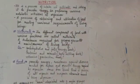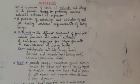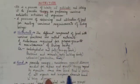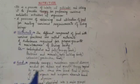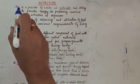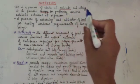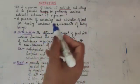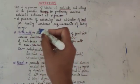Next, we will deal with nutrition — how we obtain food and how the process of intake of nutrients and their utilization works. Energy is needed to maintain a state of order in our body, and that energy we get from the food we eat. Nutrition is defined as a process of intake of nutrients and utilizing them to provide energy for performing various metabolic activities of an organism, or a process of obtaining and utilizing food for meeting various requirements of living beings.